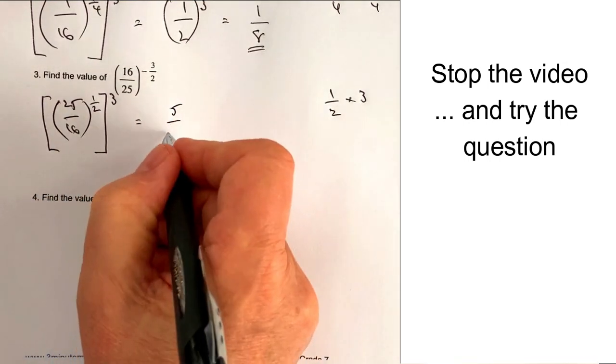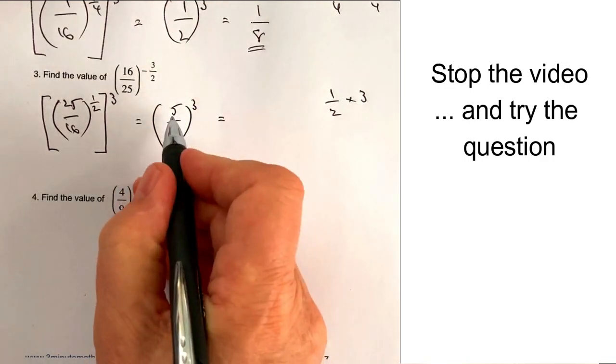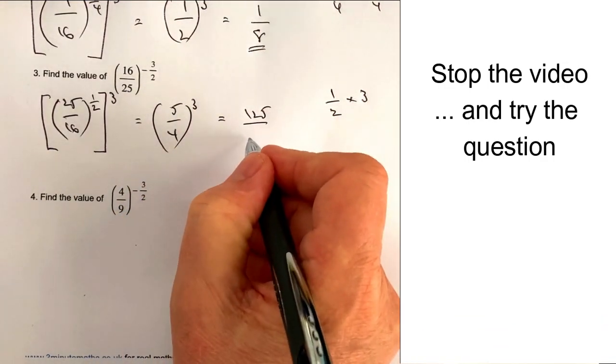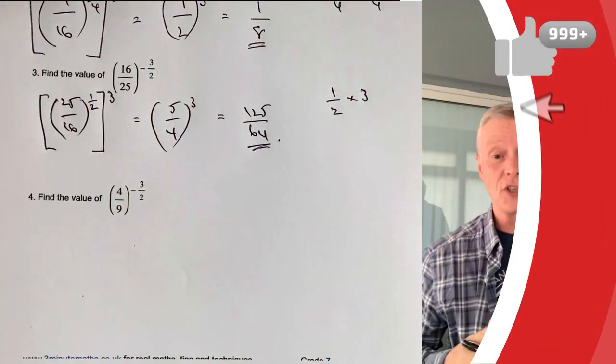Okay, and then I'm going to cube it. Well, 5 cubed is 125 and 4 cubed is going to be 64, and that would be the answer to question number 3.